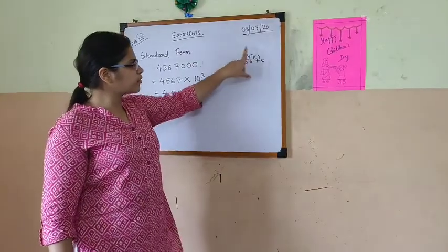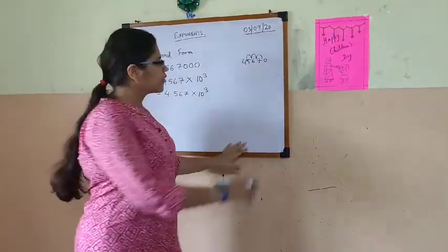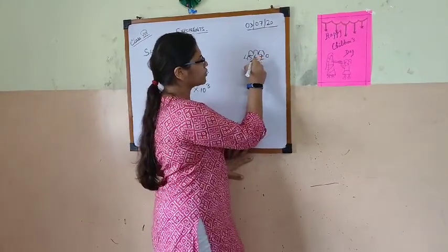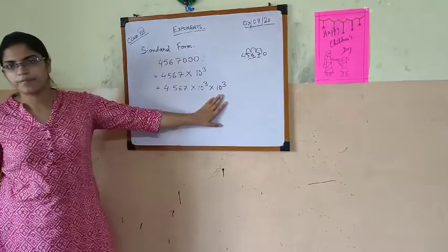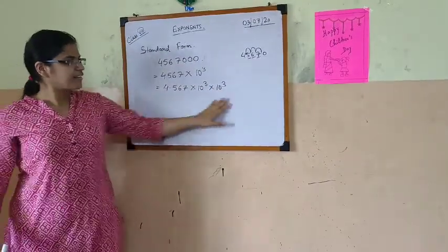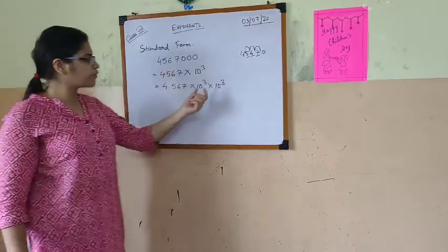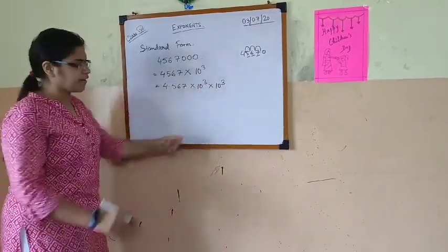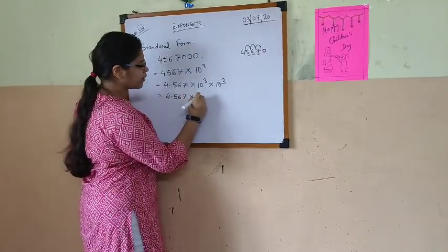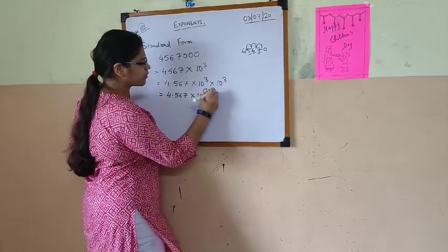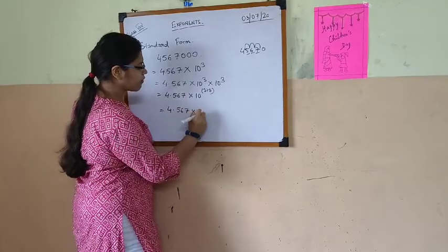Now for shifting this decimal to this side, we have to look at how many digits we are shifting — 1, 2, 3 digits. So that is why another 10 to the power 3 will come. So this is the standard form. Now in standard form these two are the same base, so we have to add up the exponents. So this will give us 4.567 multiplied by 10 to the power 3 plus 3, that means 4.567 into 10 to the power 6.